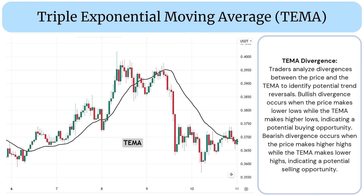TEMA Divergence: Traders analyze divergences between the price and the TEMA to identify potential trend reversals. Bullish divergence occurs when the price makes lower lows while the TEMA makes higher lows, indicating a potential buying opportunity. Bearish divergence occurs when the price makes higher highs while the TEMA makes lower highs, indicating a potential selling opportunity.